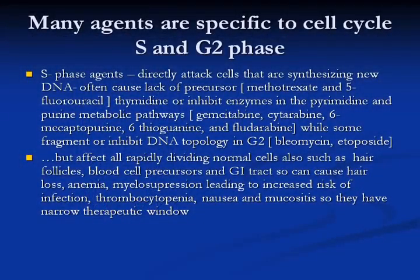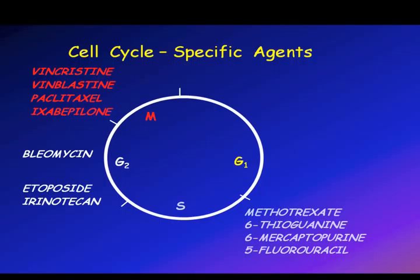These drugs affect all rapidly dividing cells. Normal cells such as those in hair follicles, blood cell precursors, and the GI tract are also affected, leading to hair loss, anemia, myelosuppression causing increased risk of infection, thrombocytopenia, nausea, and mucositis. They have a very narrow therapeutic window.